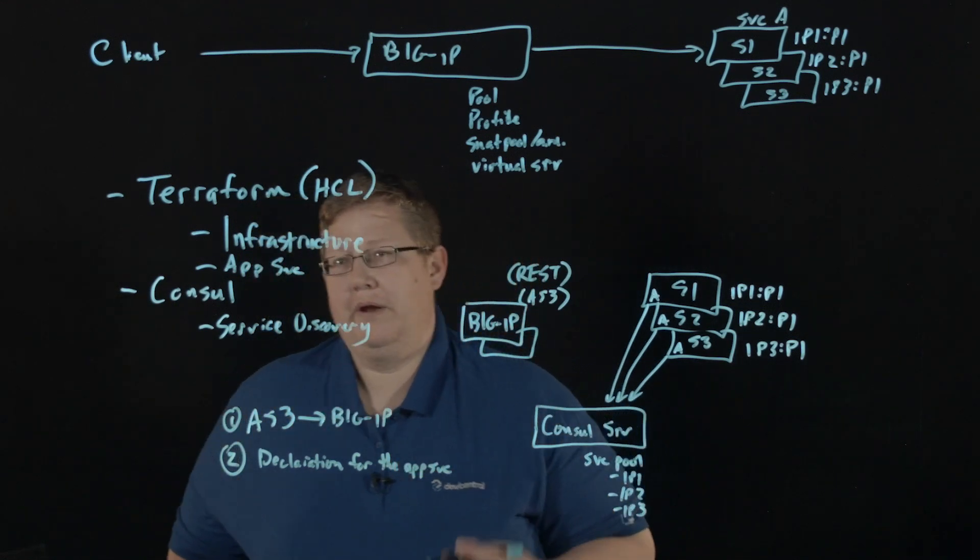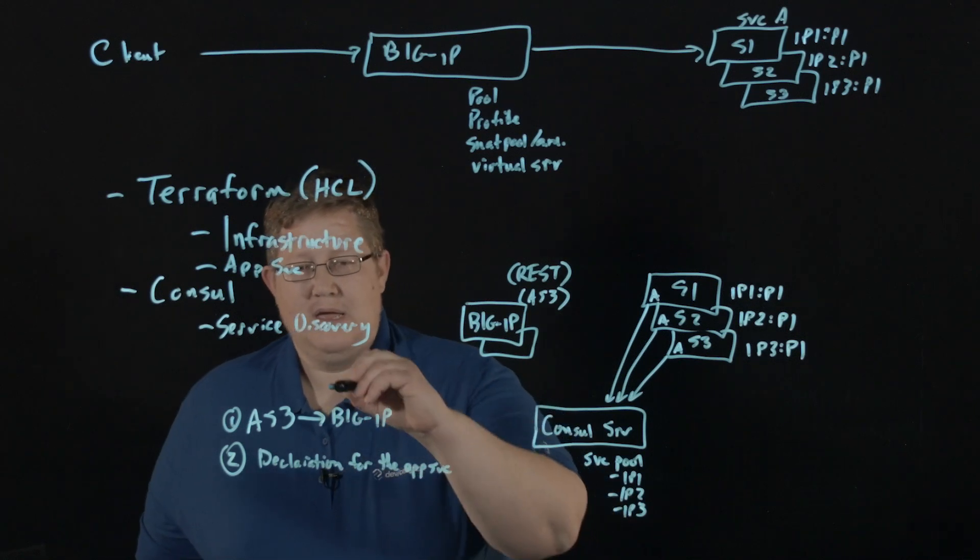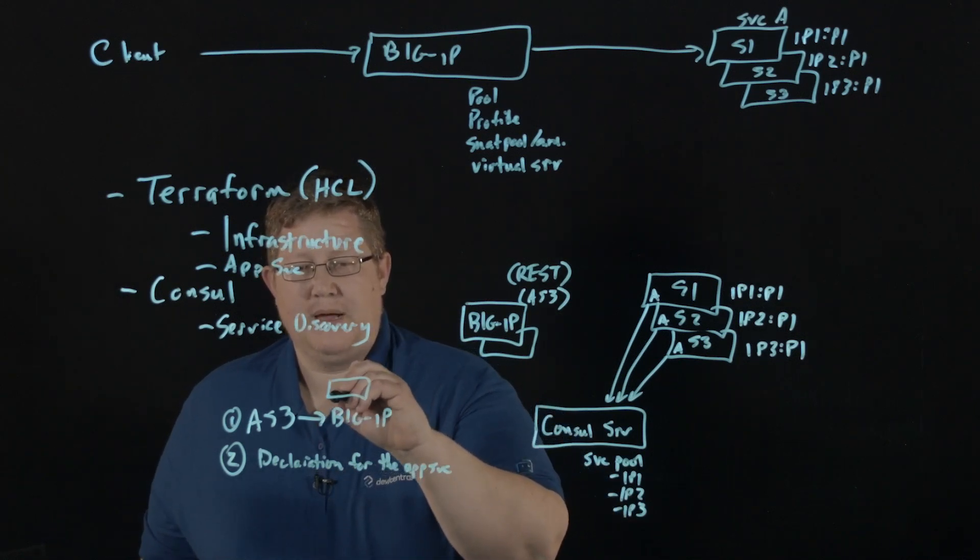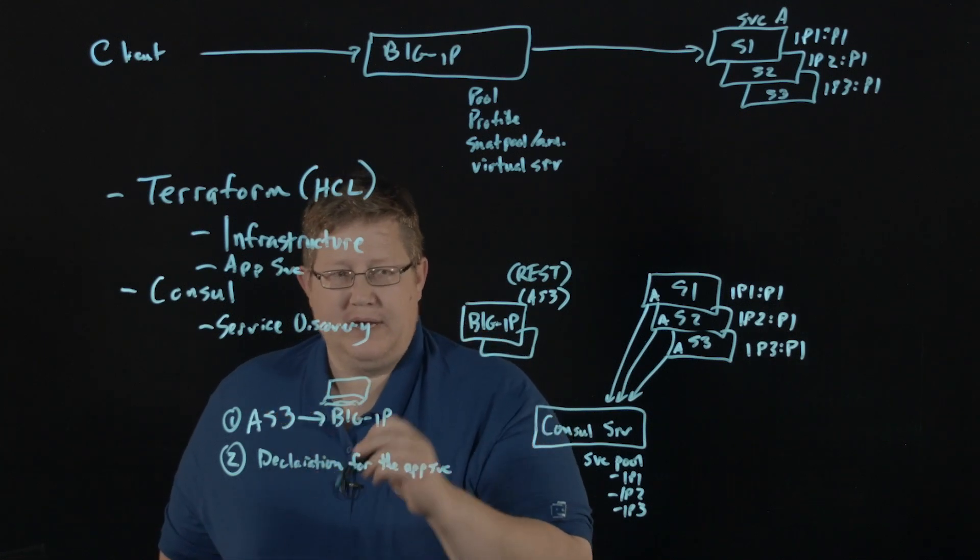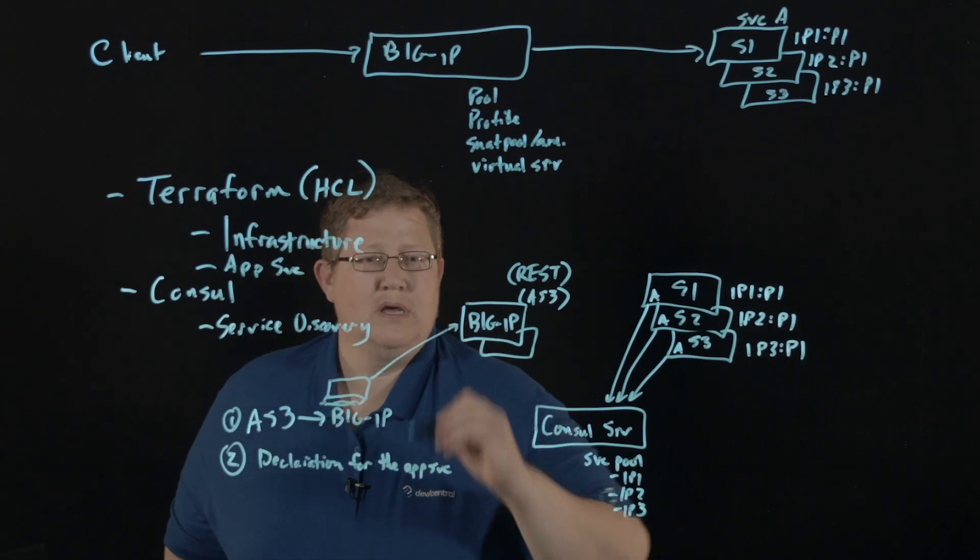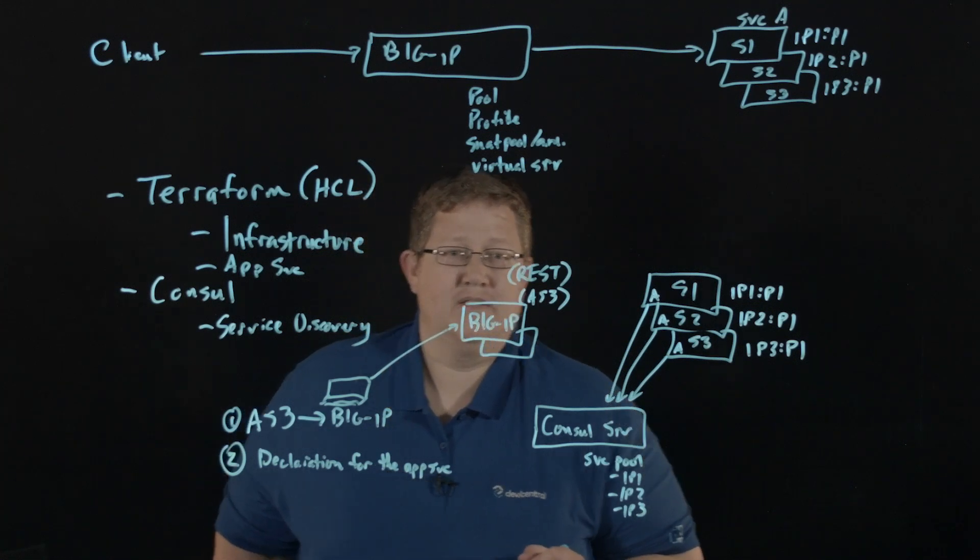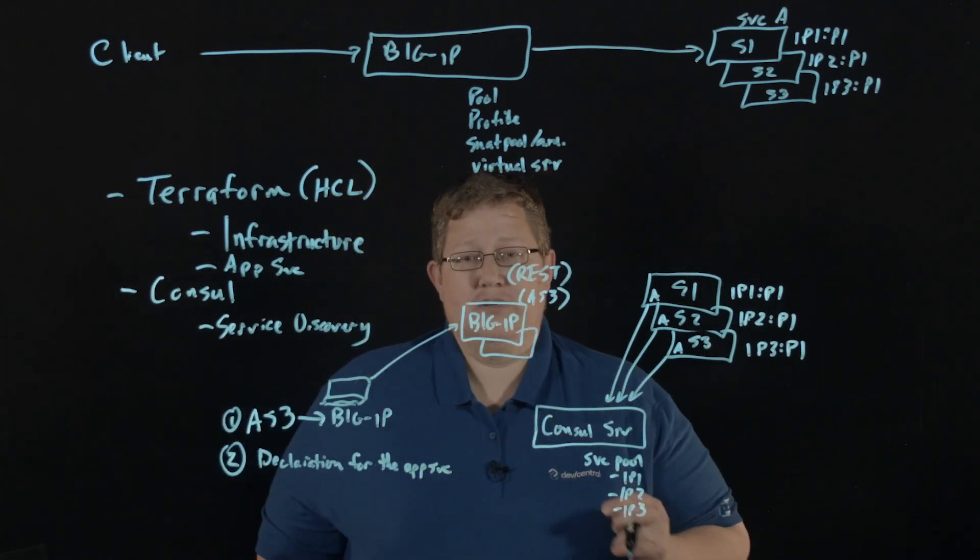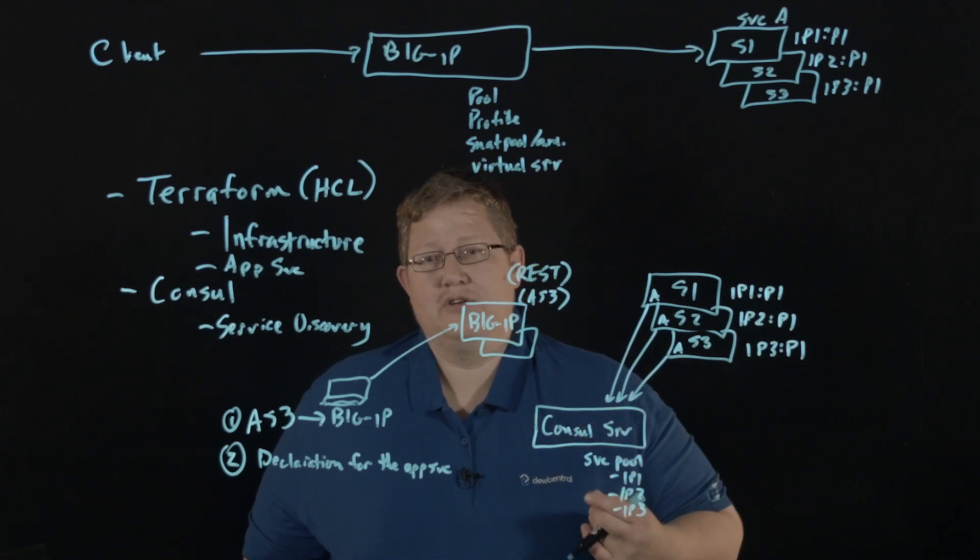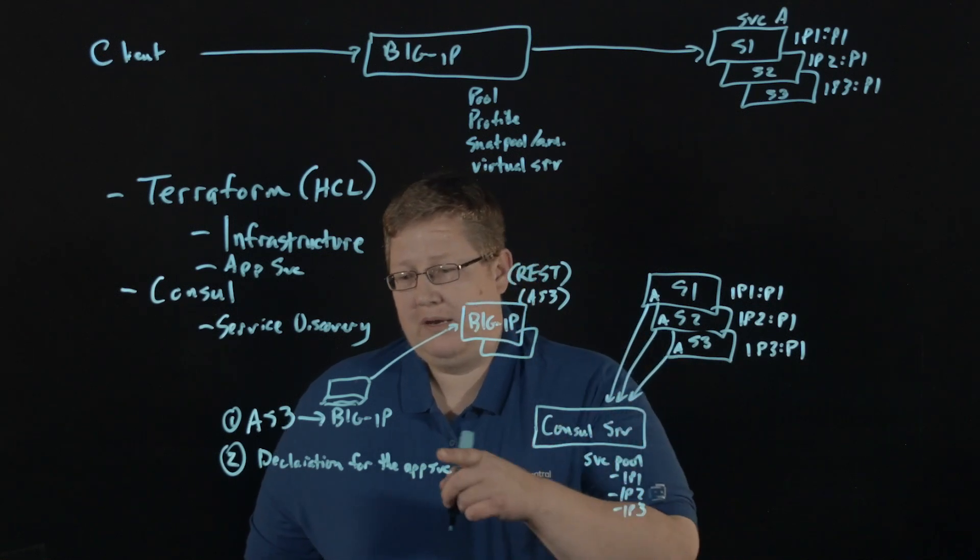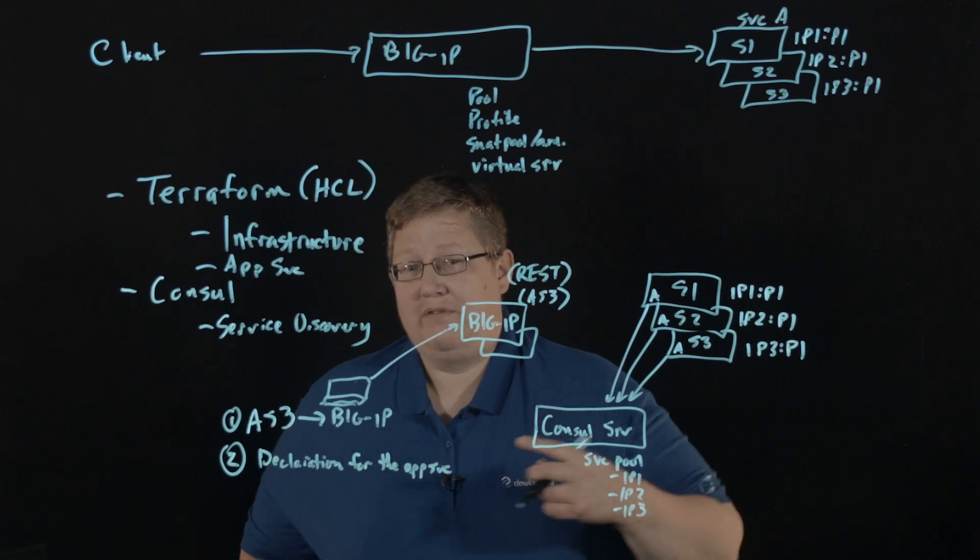And so, wherever your Terraform box is, let's say we got a little Linux box out here. We've deployed the infrastructure. We've deployed AS3. And now we're going to send the declaration to Big IP. And so once that declaration is there, Big IP is going to go through that declaration. And in that declaration, we have defined that for the pool members for this application,